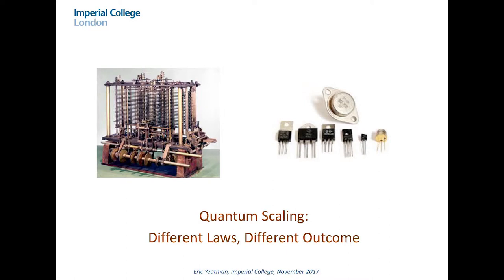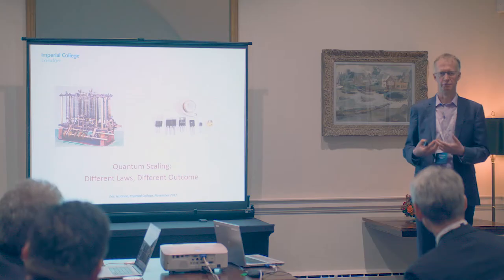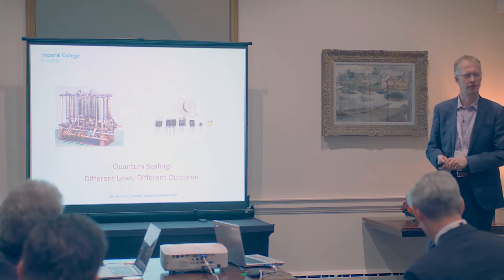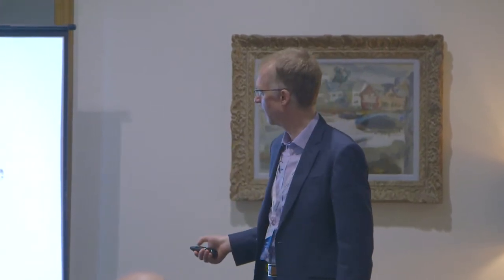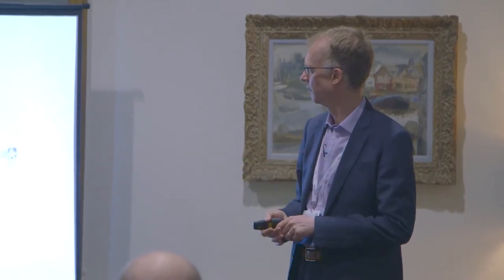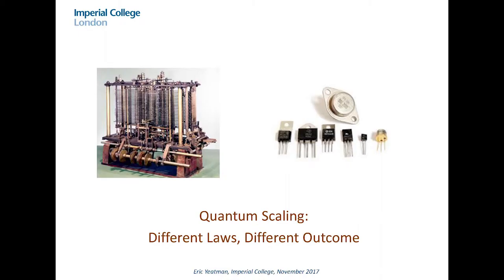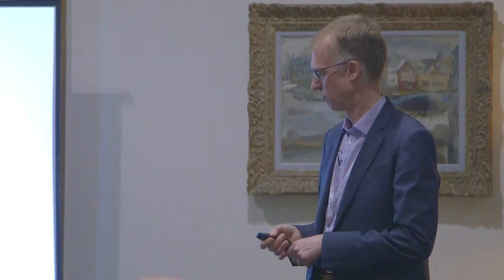But at some point, if you scale ever downwards, you get to a level where the physical laws that describe the system are different. Quantum mechanics is always there — it's not something that suddenly gets switched on — but its implications tend to get averaged out in most larger systems. Quantum mechanics is unavoidable for atomic and subatomic systems. The example I've shown is the difference between the Babbage mechanical computer from the 19th century and a modern transistor, which only works because of quantum mechanical laws.